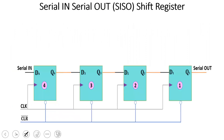SISO stands for Serial In, Serial Out — as the name suggests, data enters serially and exits serially. This is a 4-bit shift register; to store 4-bit information, we use 4 flip-flops. To store 6-bit information, we use 6 flip-flops connected in series cascade.